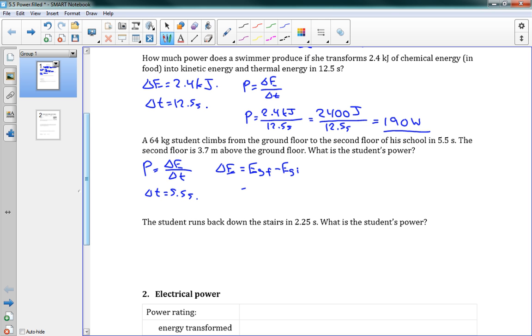In this case, we're changing gravitational energy, which means we're going from the ground floor at zero joules. So delta E becomes MGH. That's 64 times 9.8 times 3.7 meters, which gives us 2320 joules. That's our change in energy, which means that our power is delta E over delta T. So 2320 over 5.5 gives us 420 watts.